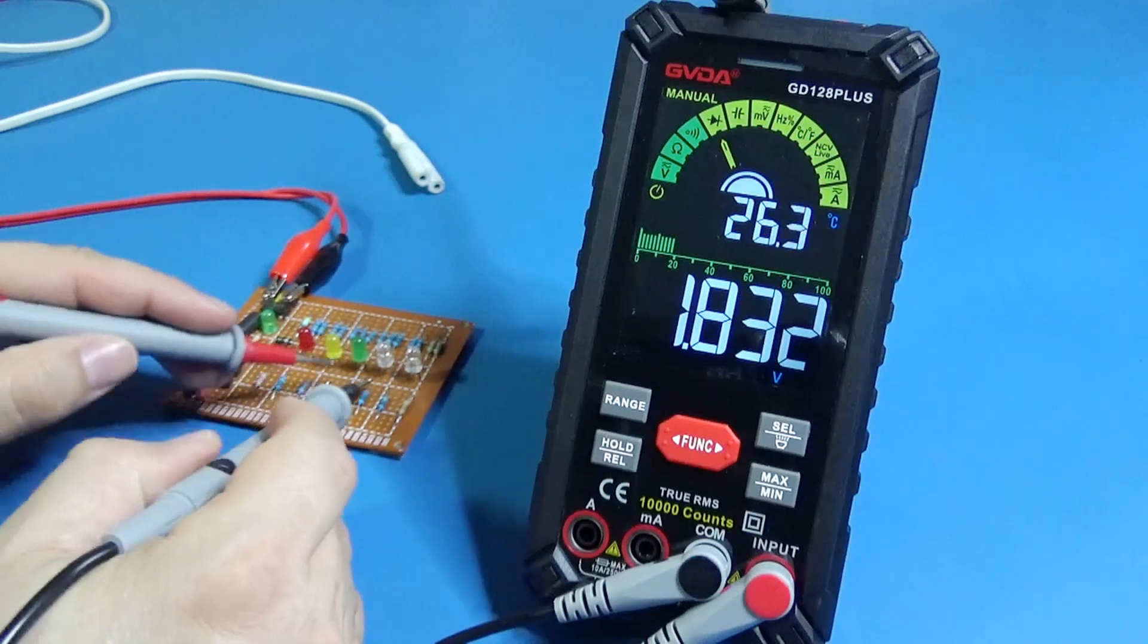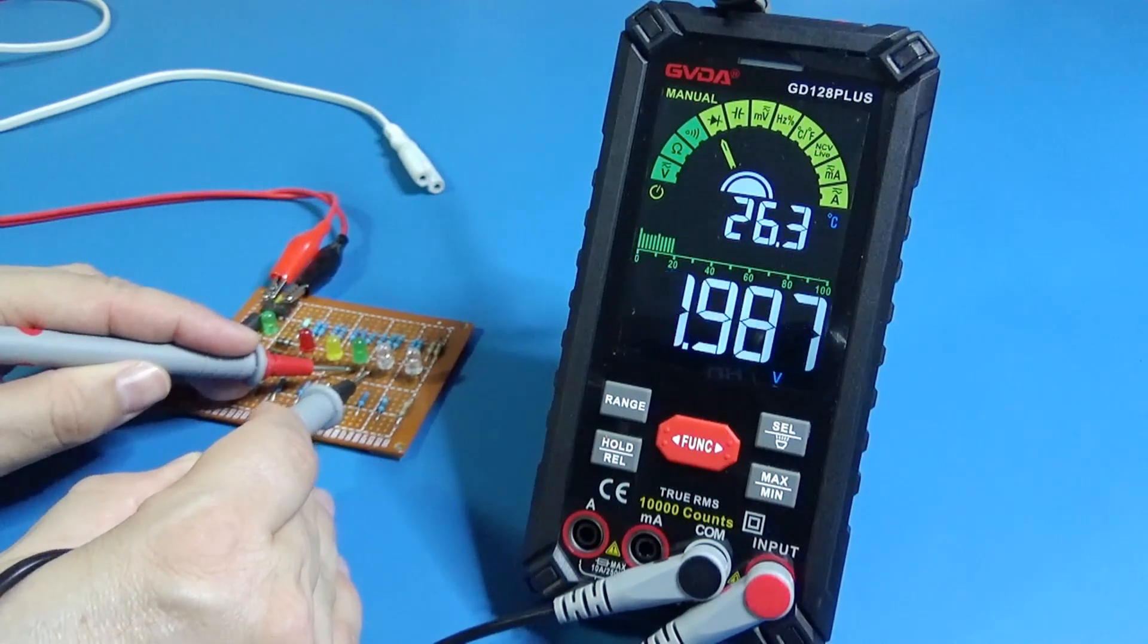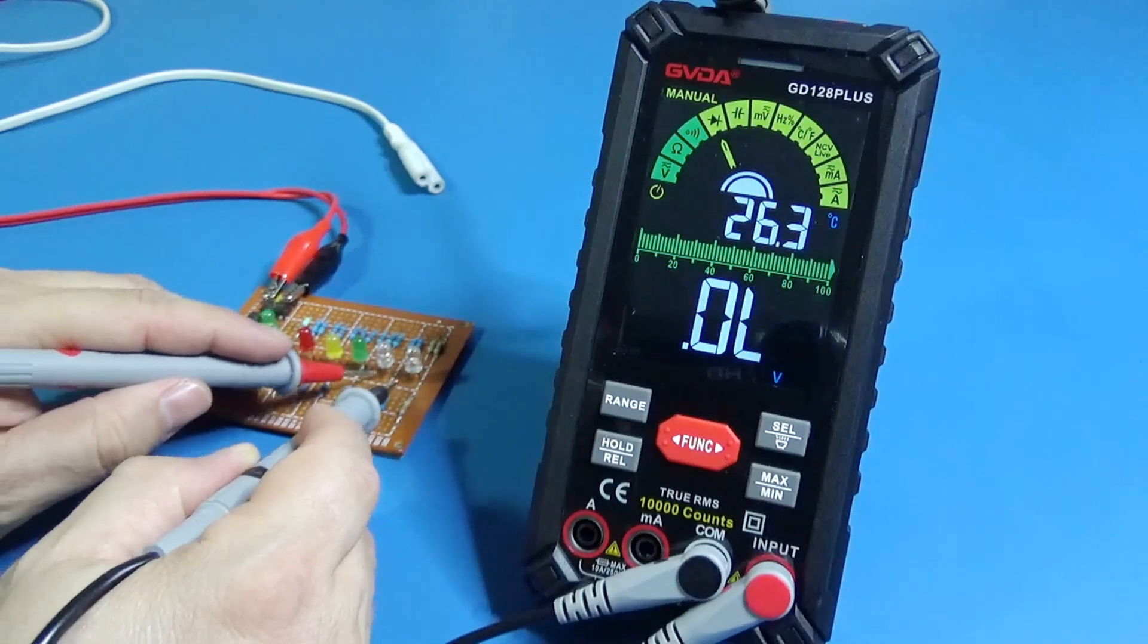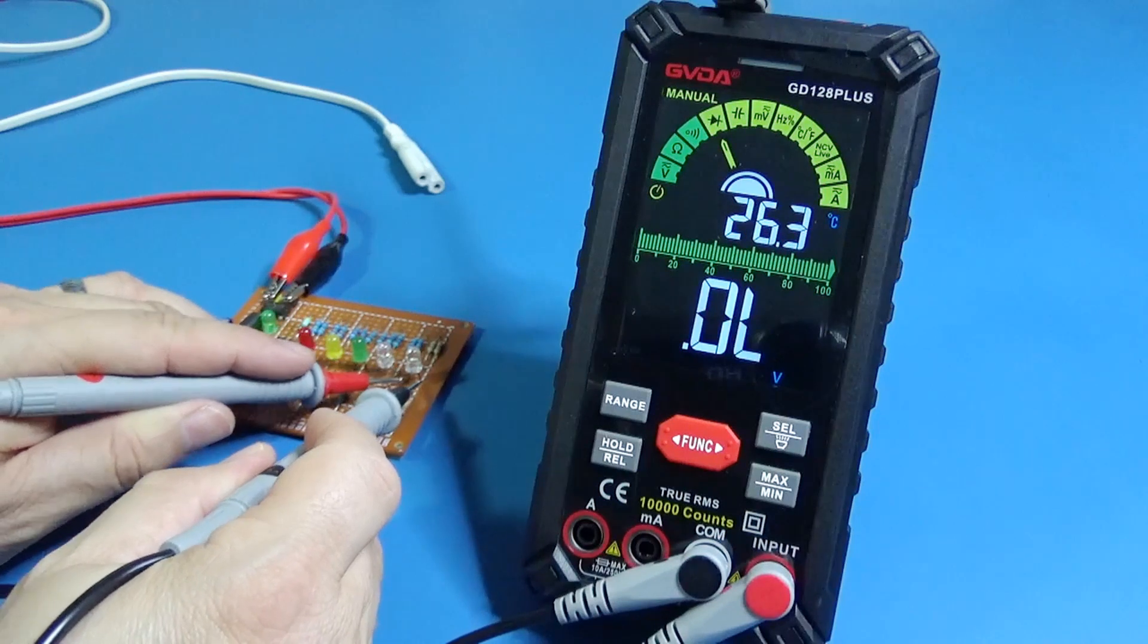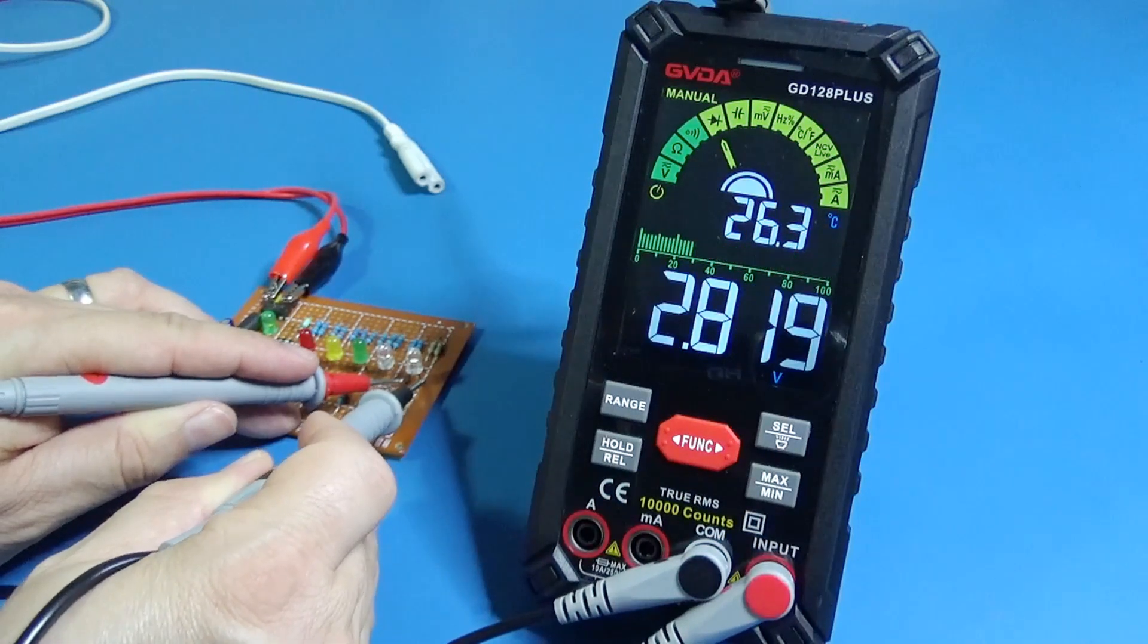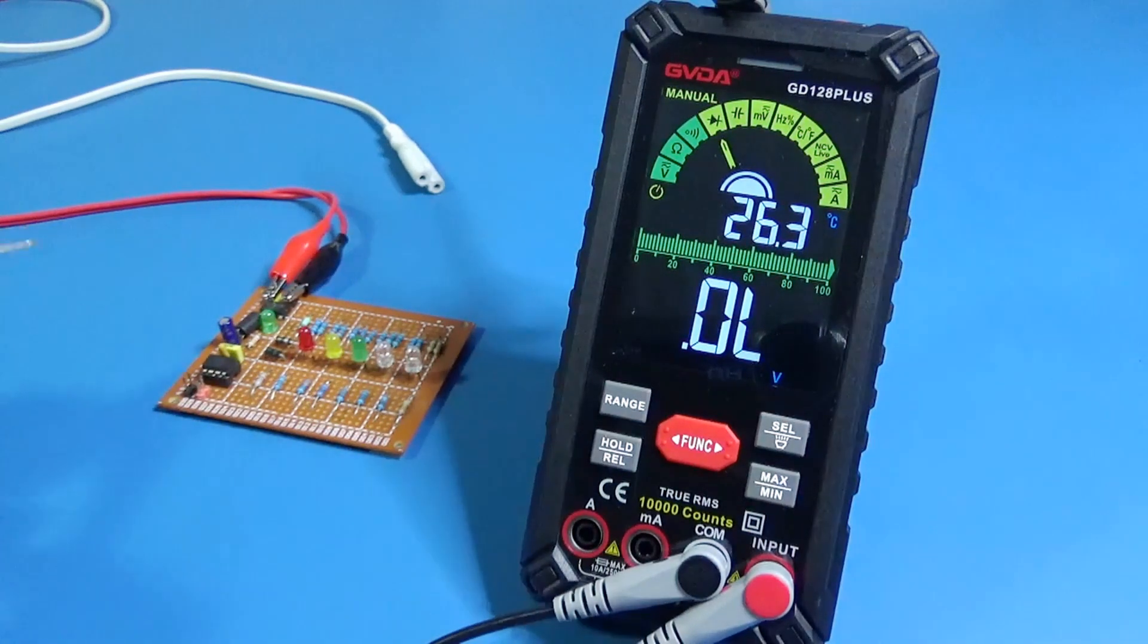And there is light on the LED - the red one, the yellow, the green, the blue, and the white. So I am able to test diodes with this multimeter, that's great.